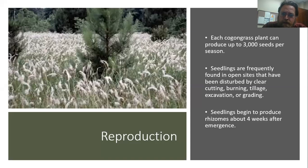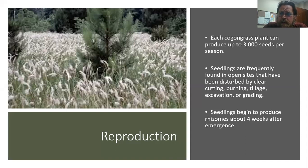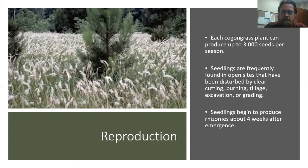You can see a larger stand of Cogongrass with all those plumes out in the field around the trees. Each Cogongrass plant can produce about 3,000 seeds in a season. We frequently see them at open, disturbed sites — areas that have been cut, burned, tilled, or graded. Seedlings can begin to produce rhizomes and really settle in about four weeks after they emerge, establishing very quickly.